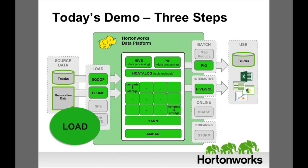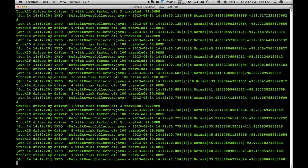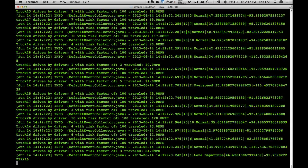We begin by loading geolocation data from our trucks, along with other types of data, into the Hadoop Distributed File System, known as HDFS. Apache Flume streams geolocation data into HDFS, and we use Apache Sqoop to import structured truck data from a database. Think of all the data in HDFS as a data lake that contains years of data on every vehicle we own and every payload we deliver. Here we can see some of the location records flowing through Flume.